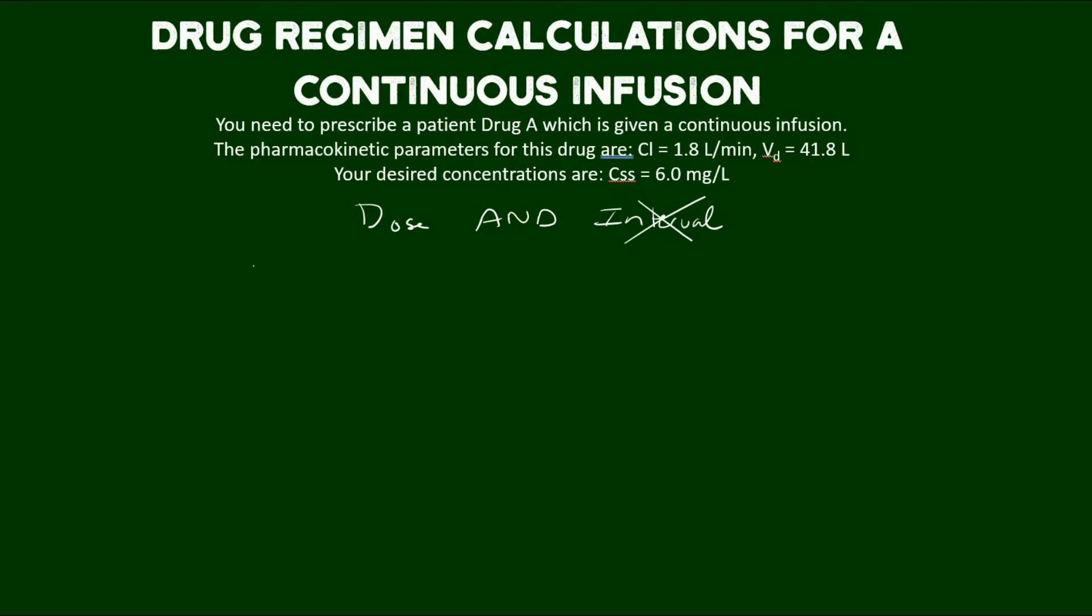So with that in mind, let's start with calculating a loading dose, which in a continuous infusion situation is concentration of steady state desired, so 6.0, times the volume of distribution. And that equals 250.8 milligrams, which we probably would round in real life to 250 milligrams. So we figured out our loading dose.